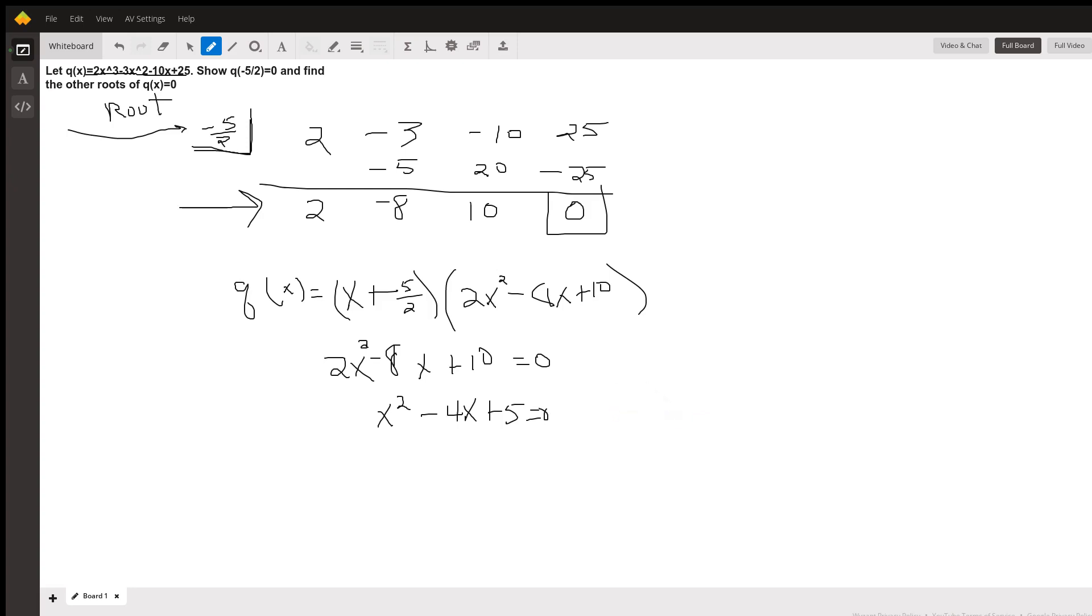And now we can use the quadratic formula. So x equals the opposite of b plus or minus the square root of b squared minus 4 times a is 1 times c is 5, all over 2 times a. 2 times a is 1, so the number under the radical is 16 minus 20, which is negative 4.